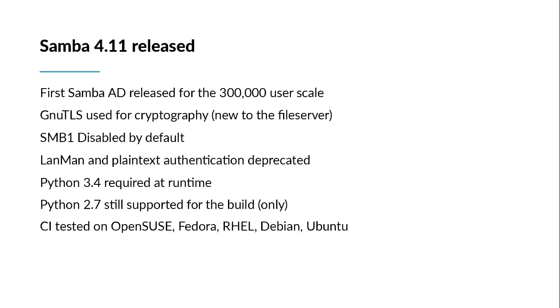We decided that SMB1 — again a lovely product of the 1980s — really shouldn't be being used anymore, and so we've disabled that by default in Samba so as to encourage people to turn it off on their networks. It is a challenge particularly around this audience because SMB1 is still the only place with decent Unix extensions, but we're trying to turn it off and move people towards SMB2, which is a much better protocol. We've also ditched LanMan and plaintext authentication because those are tied to SMB1 and are also just a really bad idea.